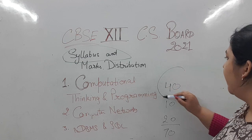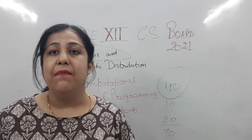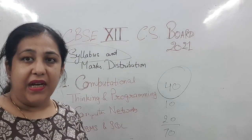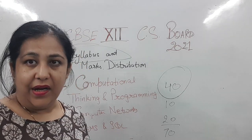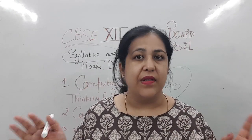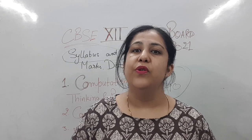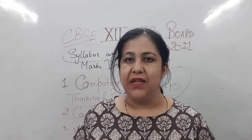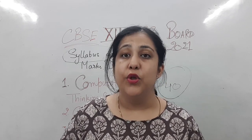The most weightage we have is Python — you will have Python for 40 marks. In addition to that there are 10 marks of Computer Networks and 20 marks of RDBMS and SQL. These two topics are the same for which we will get a lot of questions from previous papers because Computer Networks and SQL were also in the previous Computer Science syllabus. Although Networks weightage was the same, SQL was just for 8 marks but now it is for 20 marks.